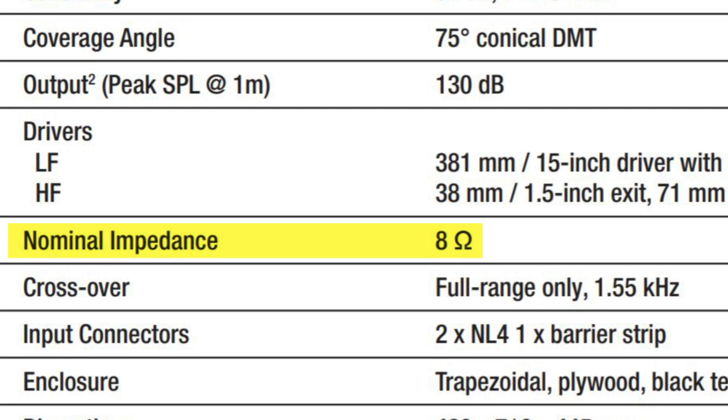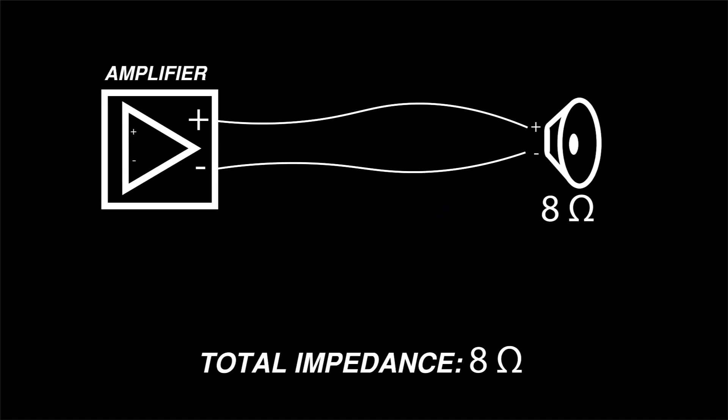Here we can see that this speaker's nominal impedance is 8 ohms. There are three basic scenarios when connecting a speaker to an amplifier, and the calculation will depend on the scenario. The first scenario is a single speaker per amp channel. When you're only connecting one speaker to the amplifier, no calculations are necessary. A single 8 ohm speaker presents an 8 ohm impedance to the amp.